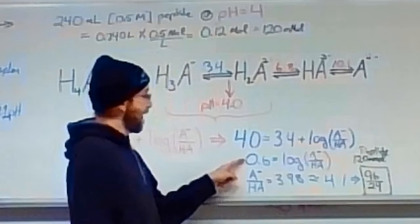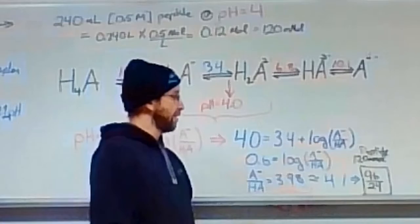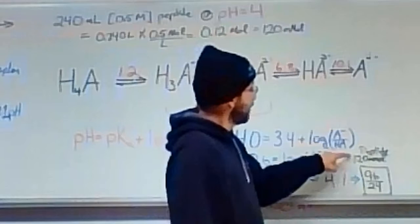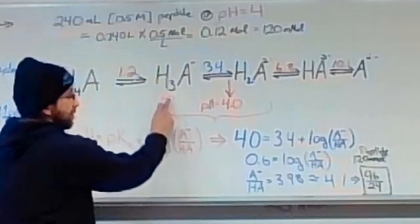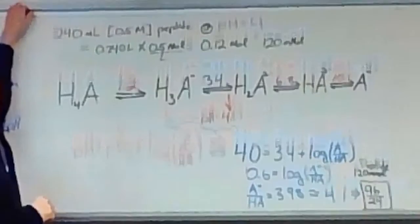A little bit more math, 0.6 equals the log of our ratio, but our ratio, therefore, must be 3.98, which is pretty close to 4. So we have a ratio of 4 to 1. If we had 120 millimoles of our peptide, we would therefore have a ratio of 96 millimoles to 24 millimoles of our acid to our base.